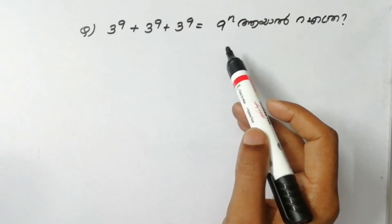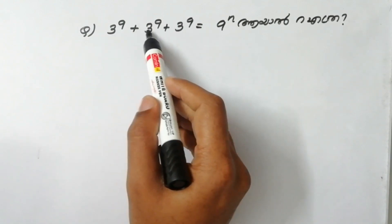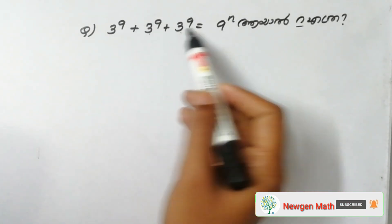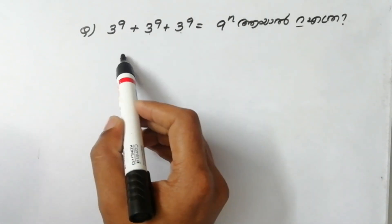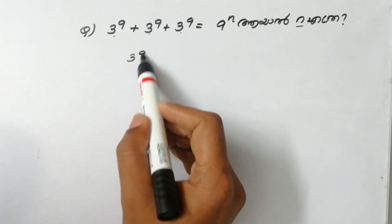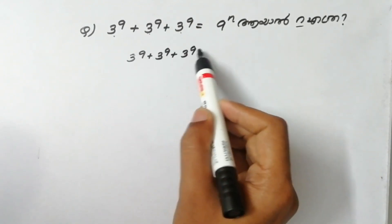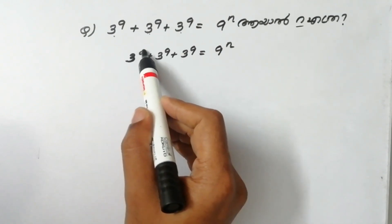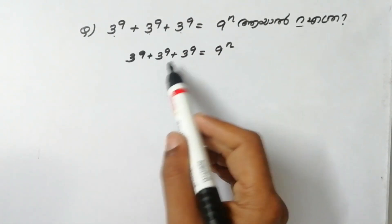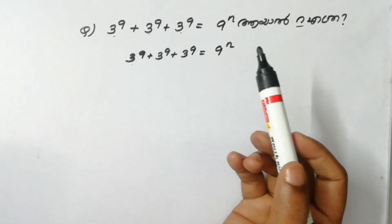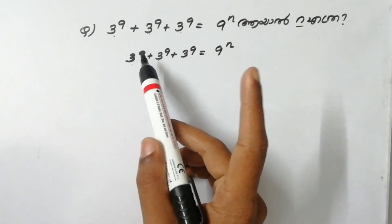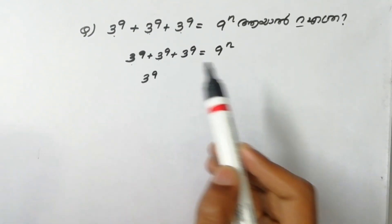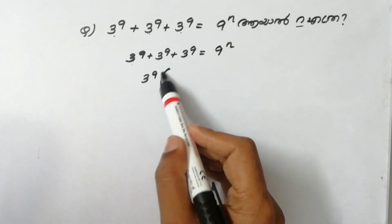What I want to do is: 3 raised to 9 plus 3 raised to 9 plus 3 raised to 9 is equal to 9 raised to n. I want to make a big difference. It's easy to do the answer. Now let's say here: 3 raised to 9 plus 3 raised to 9 plus 3 raised to 9. Let's take a look at 3 raised to 9. It's not 3 raised to 9, but the other thing is not 3 raised to 9.